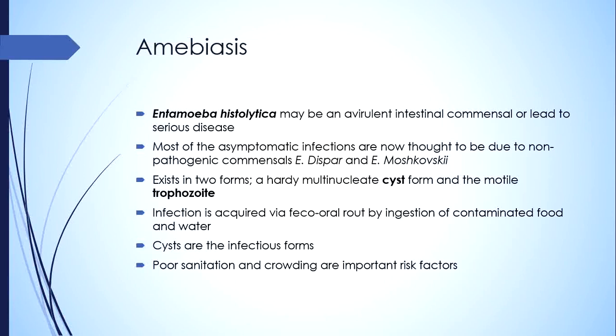The amoeba exists in two forms: a hardy multi-nucleated cyst form, which is the inactive form, and the motile trophozoite, which is the active and pathogenic form. Infection is acquired by the feco-oral route by ingestion of contaminated food and water. Cysts are the infectious form because they are tough, can resist the outside environment, and can tolerate gastric acidity. The trophozoite form cannot survive for long outside the body and cannot tolerate gastric acidity. Poor sanitation and crowding are important risk factors.